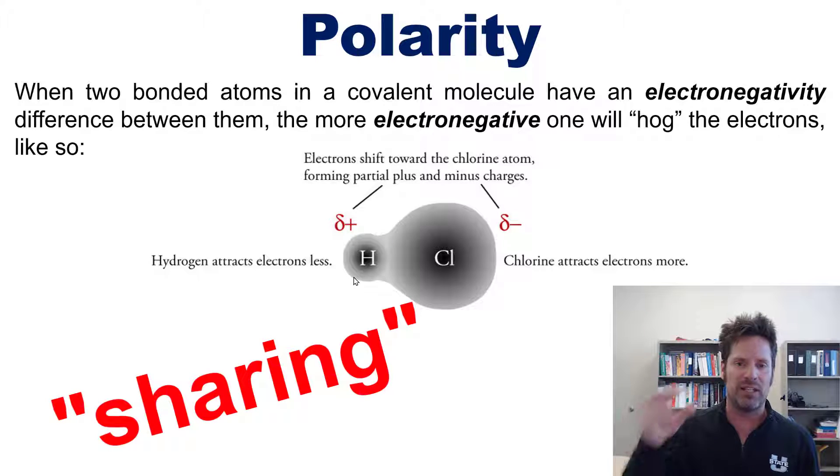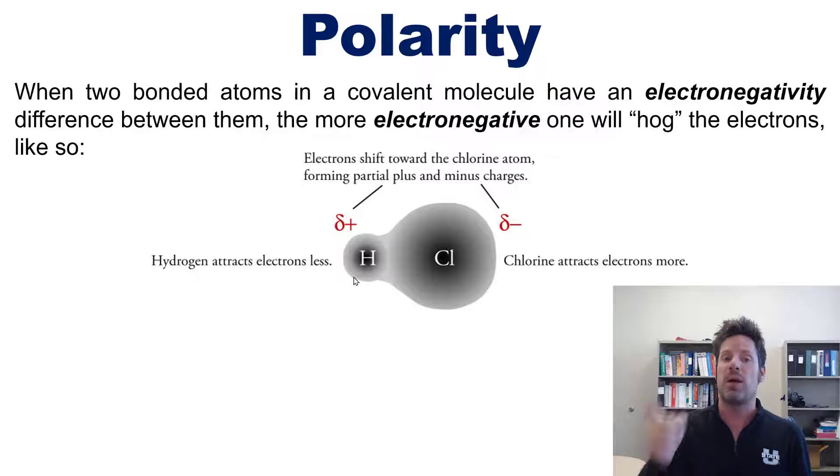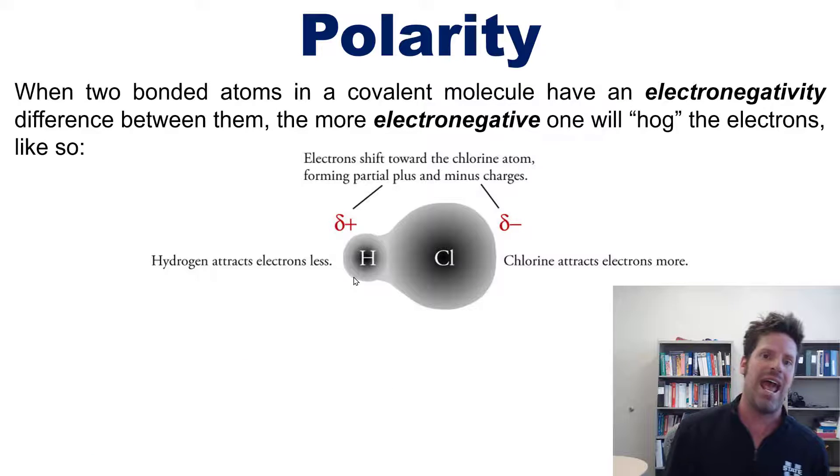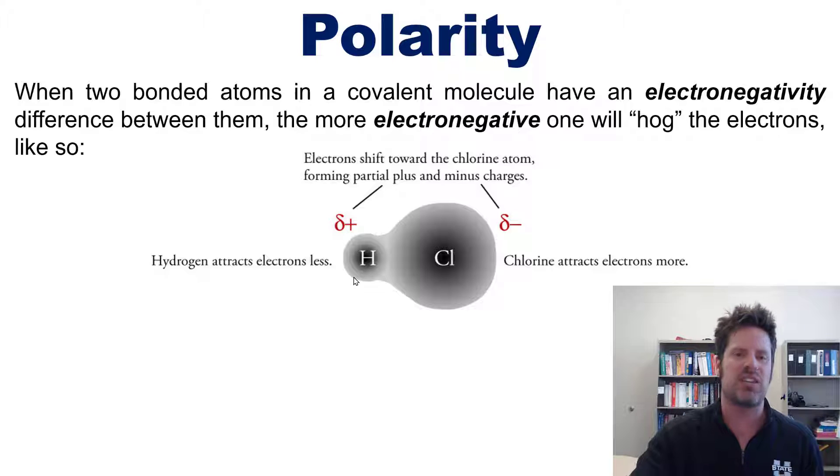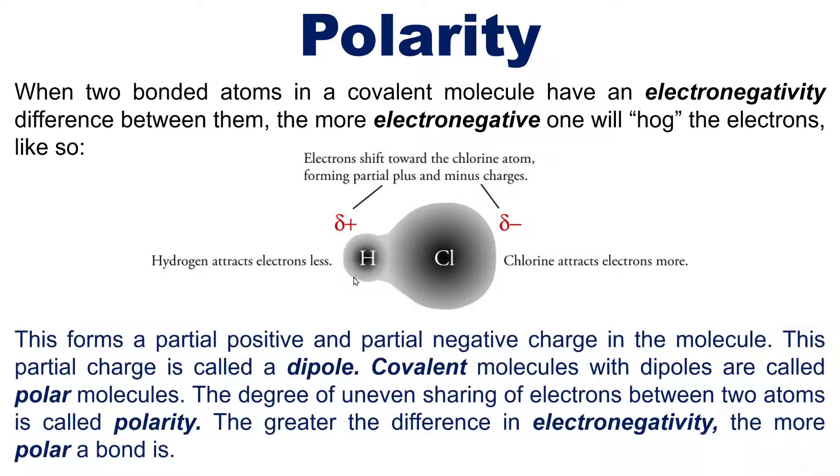This is a sharing of electrons. Nevertheless, the sharing can sometimes be uneven if you have one atom being much more electronegative than the other. Makes sense. So this particular situation, as you can see, forms a partial positive on the hydrogen and a partial negative on the chlorine. This partial charge difference, or uneven sharing of electrons, is called a dipole.